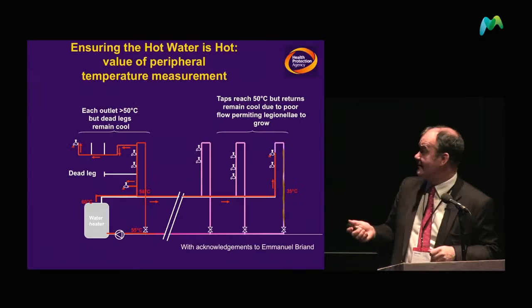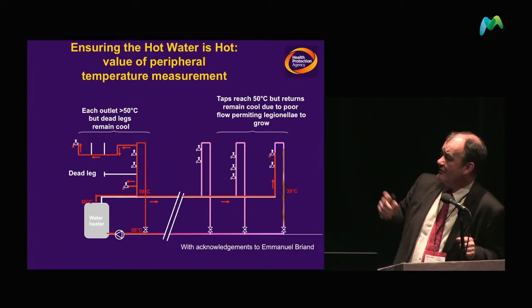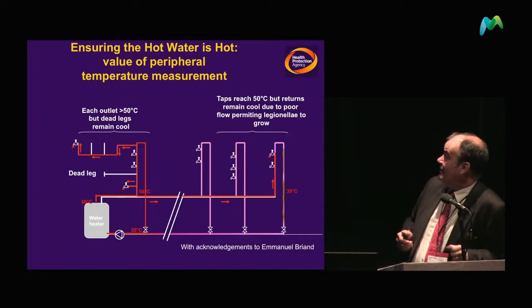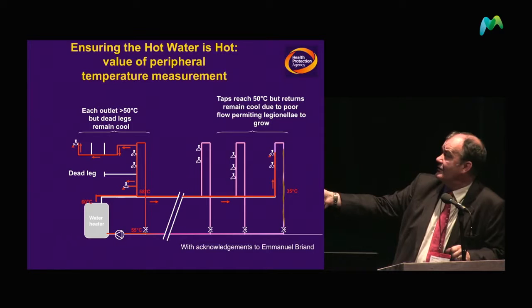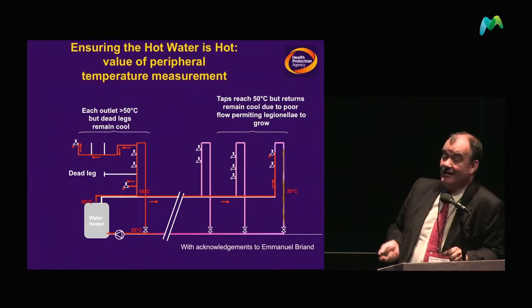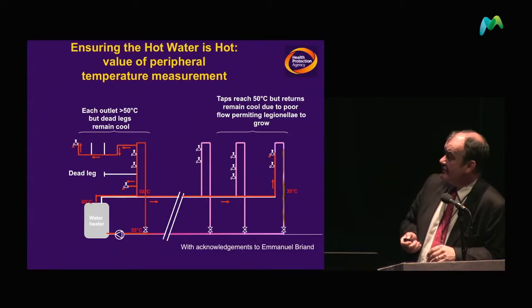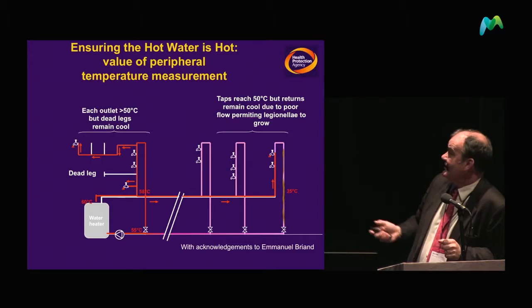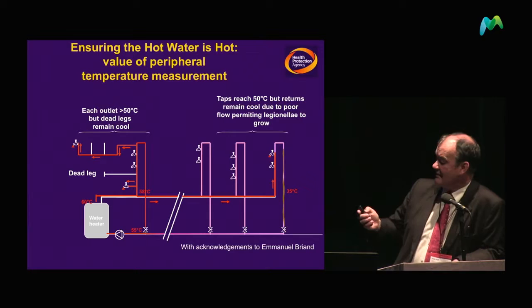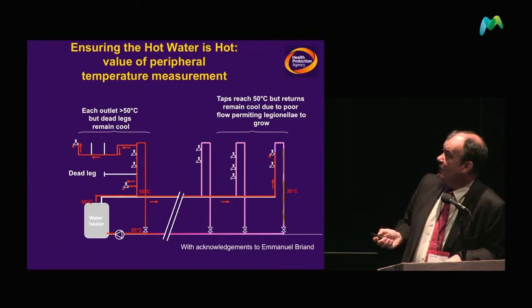This illustrates some of the problems — 55 to 60 degrees leaving the hot water tank and 55 degrees returning, as required by legislation. However, you can get dead legs where there is no hot water circulating, reaching temperatures of anywhere between 30 and 40 degrees — ideal reservoirs for Legionella — which can then intermittently work their way into the system.